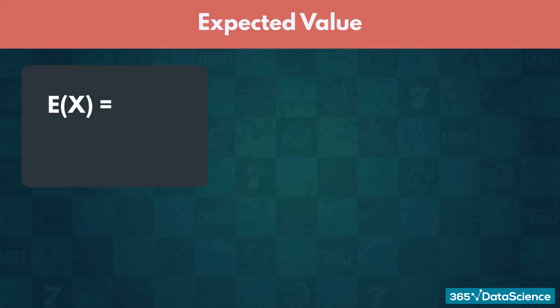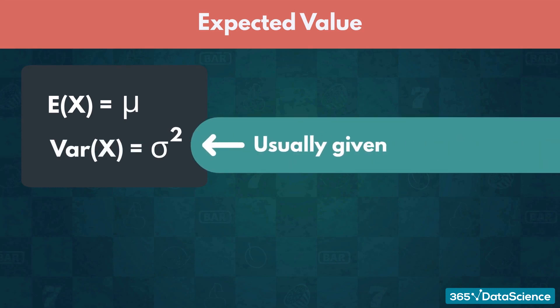The expected value for a normal distribution equals its mean, mu, whereas its variance, sigma squared, is usually given when we define the distribution.